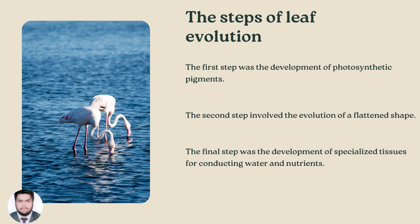The steps of leaf evolution: the first step was the development of photosynthetic pigments. The second step involved the evolution of leaf shape. The final step was the development of specialized tissues for conducting water and nutrients.